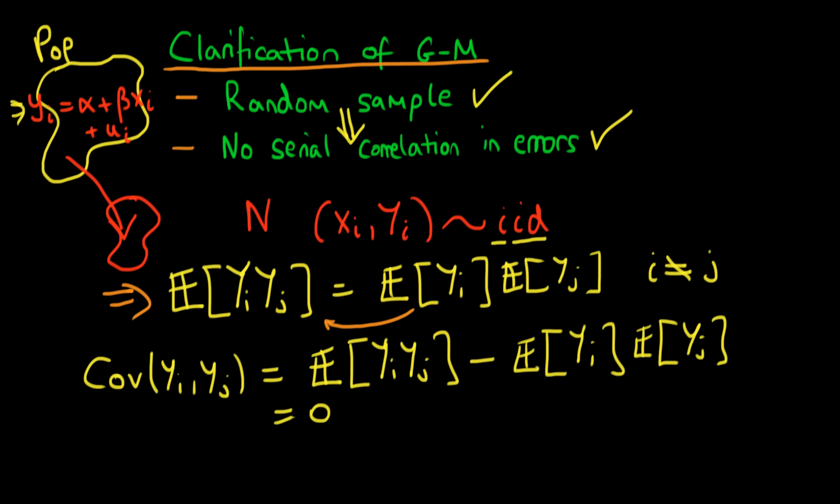So yi and yj being independent implies that their covariance must be zero. How do we use this to help us find out what the covariance between two of the errors is? The idea is that we can replace each of these yi or yj by the population process. So this first yi here becomes alpha plus beta times xi plus ui, where I've just substituted in from this population process up here. And then for yj I substitute in alpha plus beta xj plus uj, and then we can just expand this covariance as we would a normal bracket.